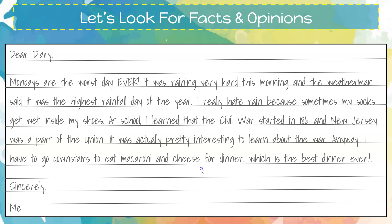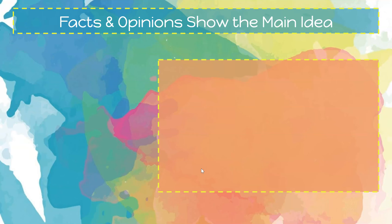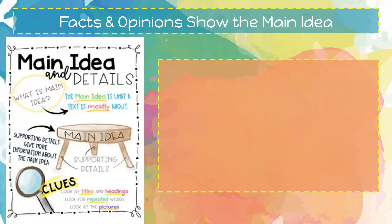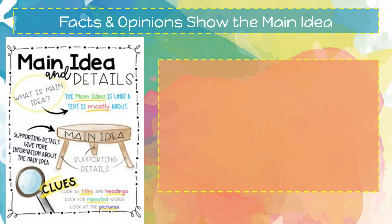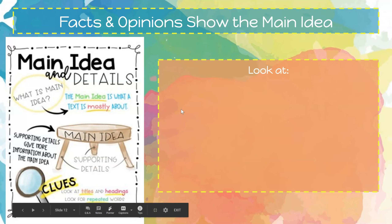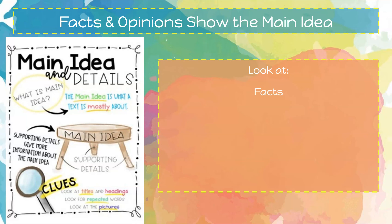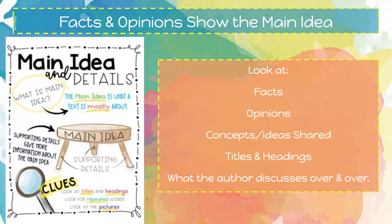Let's talk about how facts and opinions show the main idea. The main idea is what the text is mostly all about, and it is supported by details — usually facts and opinions. These facts that support the main idea give more information about it. Some clues to help you are titles, headings, repeated words, and pictures. To identify the main idea, look at facts, opinions, concepts and ideas shared by the author, titles and headings, and what the author discusses over and over.